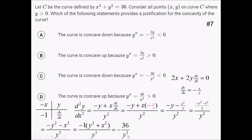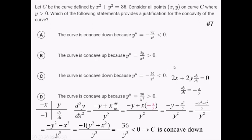Now we have negative 36 over y cubed. Since the problem states y is greater than 0, cubing it keeps it positive. So we have a positive over a positive inside a negative fraction — overall this is negative for all values of x and y we're allowed to consider. Since the second derivative is less than 0, this curve is always concave down on the intervals we're considering. So we want to pick concave down because y double prime is negative 36 over y cubed, which is less than 0. Choice C.